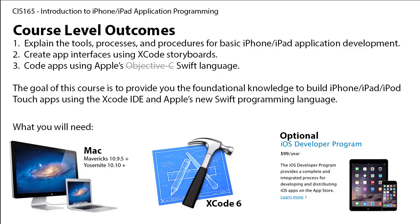You've taken a look at the syllabus and you've seen there are several competencies that our district says you will learn in this course. I prefer to work with course level outcomes, which are more of the umbrella statement that encompasses those competencies. There are three things you should be getting out of this course. You should be able to explain the tools, the processes and the procedures for creating basic iOS applications. We're going to be using Xcode as our environment to develop these, and you're going to be able to create interfaces using what we call storyboards in Xcode.